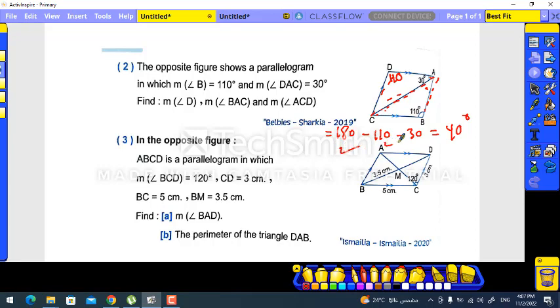The last one is angle ACD. The same steps: 180 minus 110 minus 30, it will be 40 degrees. The last one: measure BAD.